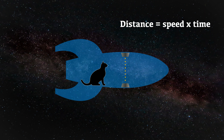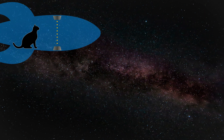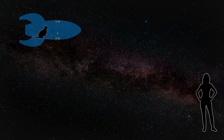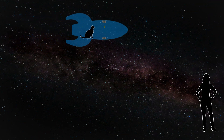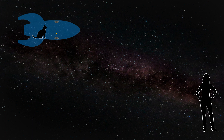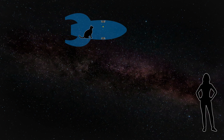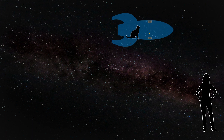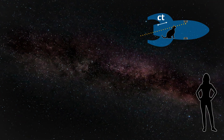We know that distance equals speed times time, so the distance travelled is C times T, where C is the speed of light in a vacuum, and T is the time it takes to hit the mirror. Now, let's say that the rocket is moving relative to a stationary observer here on Earth. In the observer's reference frame, the distance they see the light has travelled is not the same as the distance the cat on the rocket sees. The distance seen by the observer is larger than the distance seen by the cat. But since special relativity says that the speed of light is the same for all observers, we know that the distance travelled must be C times T prime, where T prime is longer than T — i.e., time passes more slowly for the cat on the fast-moving rocket.